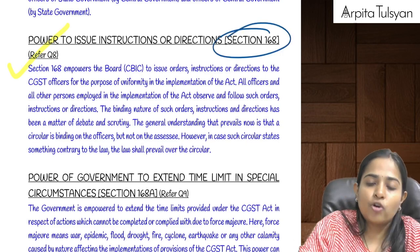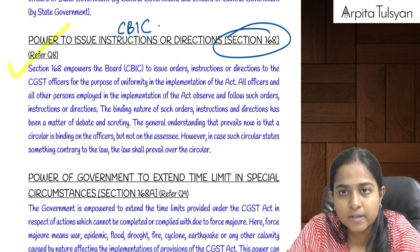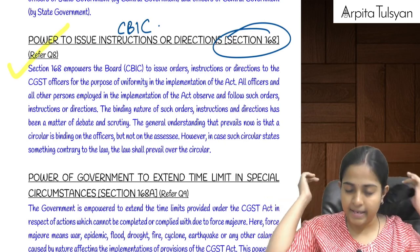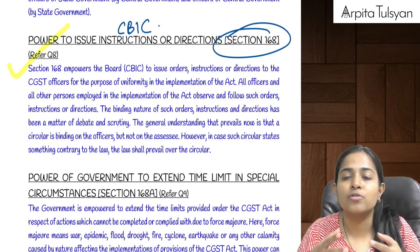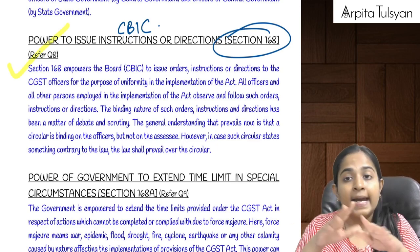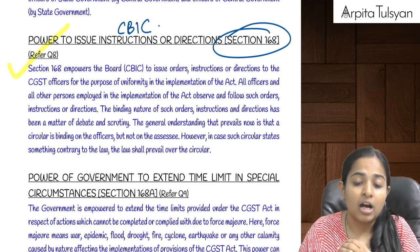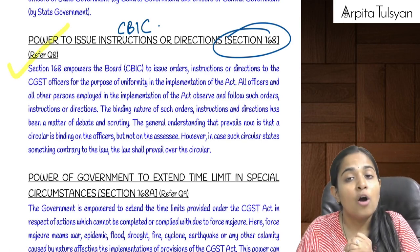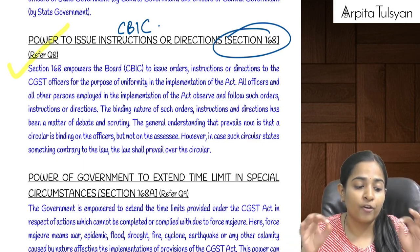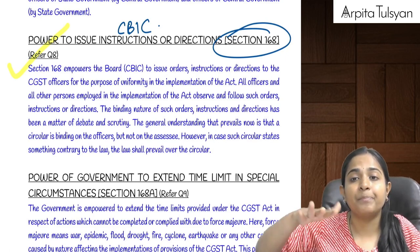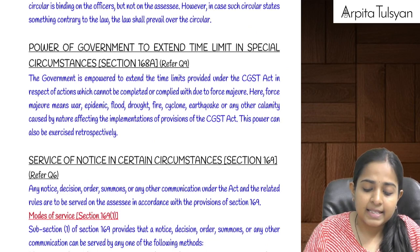Section 168 covers the powers of CBIC — the board — to issue circulars, instructions, and directions to CGST officers so they implement GST provisions uniformly. These circulars are binding only on CGST officers, not on the assessee or taxpayer — they are only for the department. If there is any difference between a circular and the law, the law always prevails.